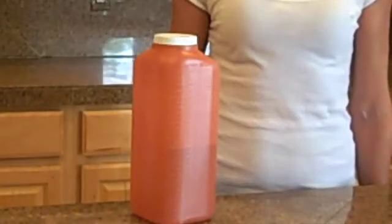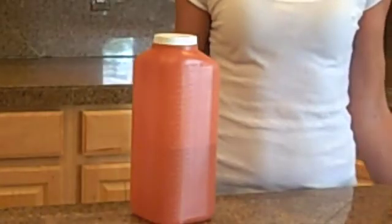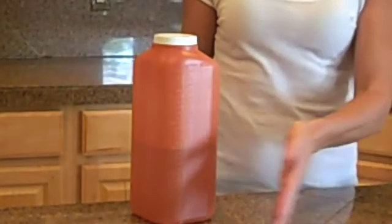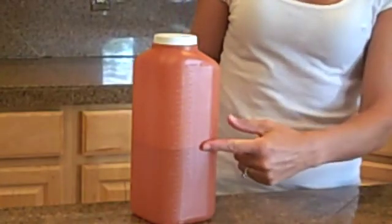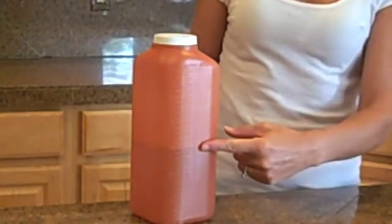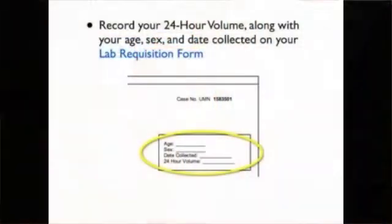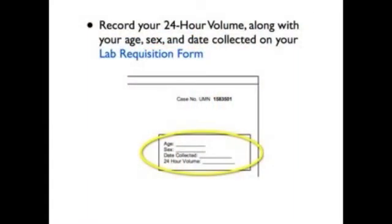Make sure to record your 24-hour volume measured on the side of the collection container in milliliters, and include this information along with your age, sex, and date collected on the top of your form as well.